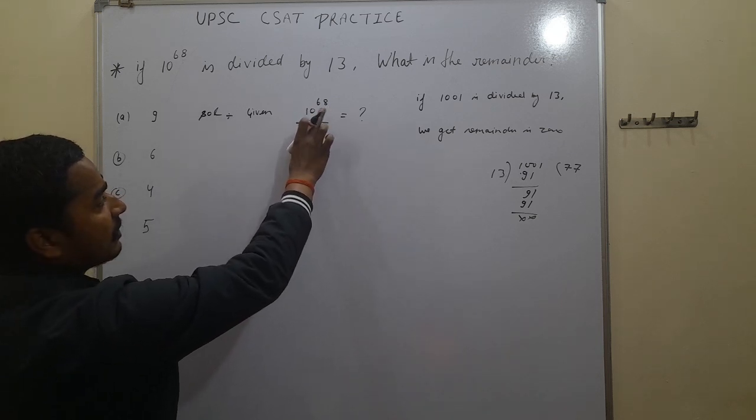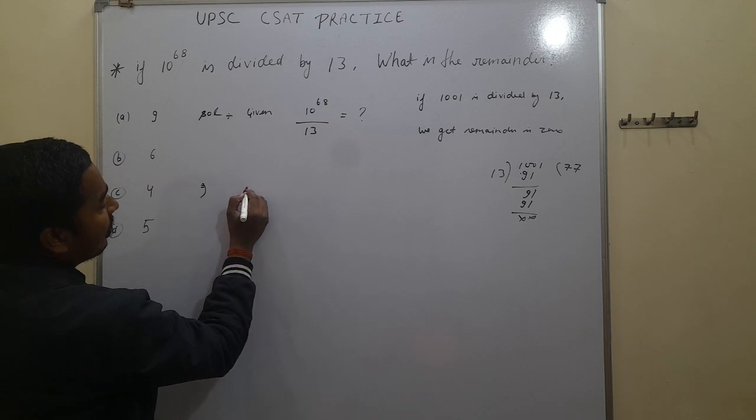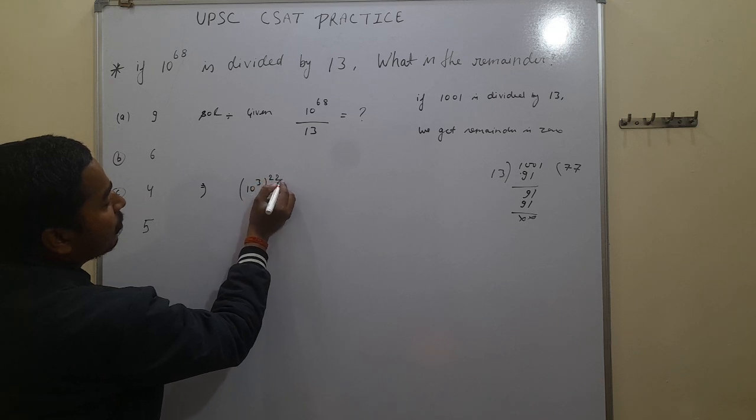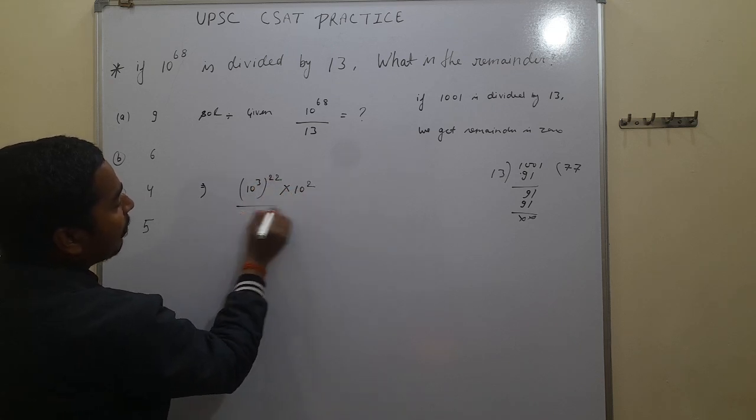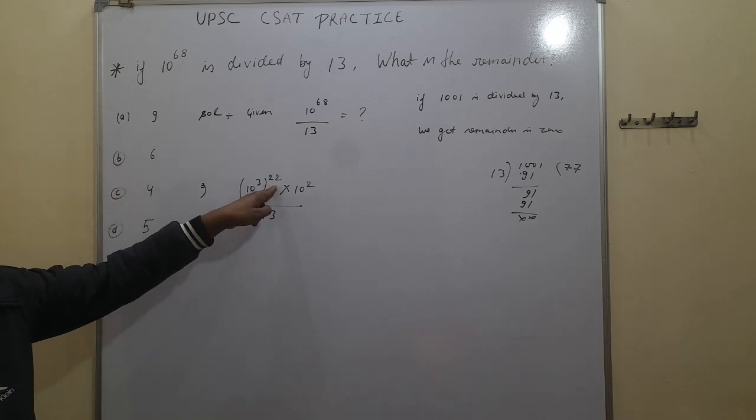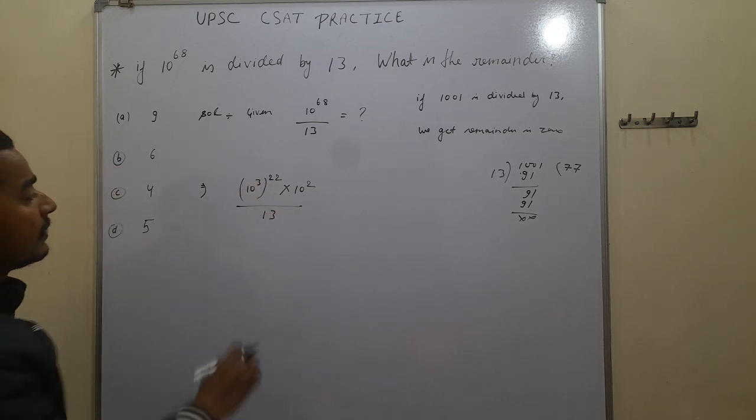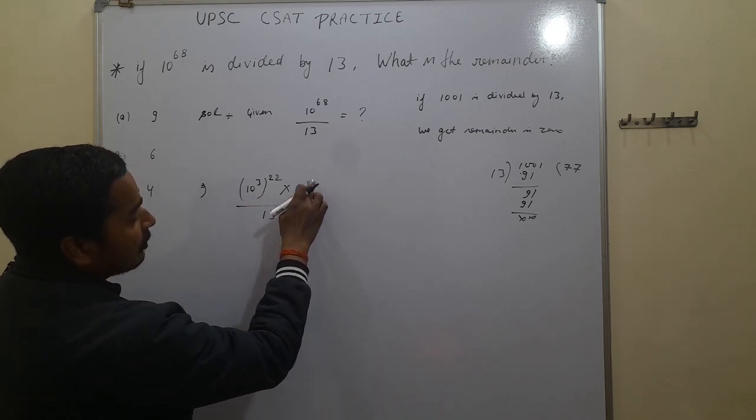We have to break the power first. This we can also write in the form of 10 to the power of 3 into 22 and into 10 to the power of 2 upon 13. Here 22 times 3 is 66, and 10 to the power 66, and plus multiplication of 10 to the power of 2.